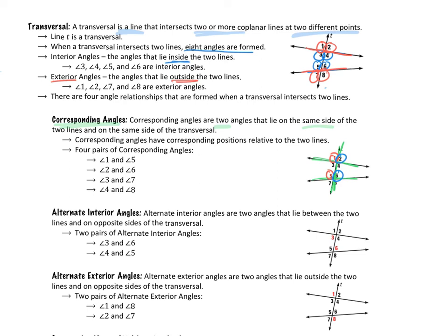The next angle relationship is alternate interior angles — a pair of angles that are interior (inside the two lines) and on alternate, meaning opposite, sides of the transversal. There are two pairs: angles 3 and 6, or angles 4 and 5, are alternate interior angles because they are on opposite sides of the transversal and inside the two lines.